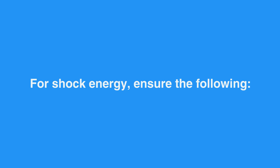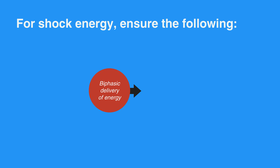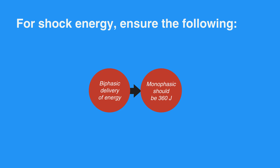For shock energy, ensure the following. Biphasic delivery of energy during defibrillation has been shown to be more effective than older monophasic waveforms. Follow manufacturer recommendations — for example, an initial dose of 120 to 200 J. If unknown, use maximum available. Second and subsequent doses should be equivalent, and higher doses should be considered. Monophasic should be 360 J.